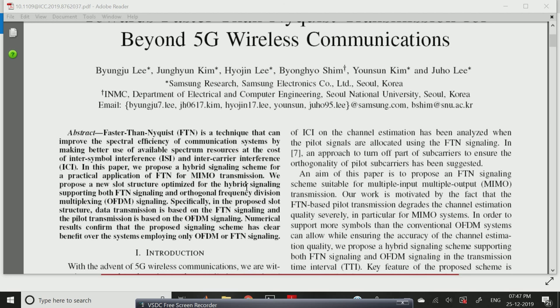By making better use of available spectrum resources at the cost of inter-symbol interference and inter-carrier interference. There are two analyses we are using: first one is ISI, and another one is ICI. The ISI, inter-symbol interference, is where within the network we optimize or calculate the error rate.